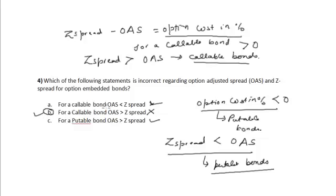Hence the correct answer is option B, because for a callable bond the option adjusted spread is less than the Z-spread. The Z-spread, or zero volatility spread, refers to the equal amount added to a treasury spot rate so as to get the present value of future expected cash flows.